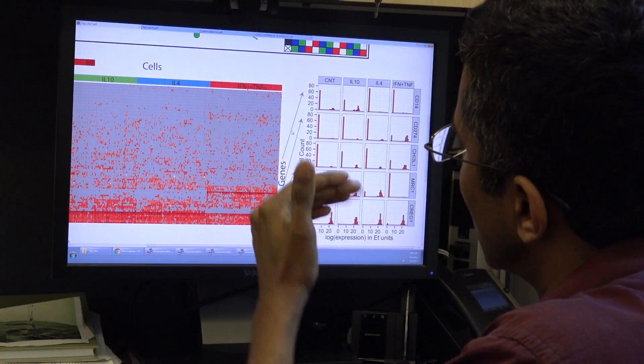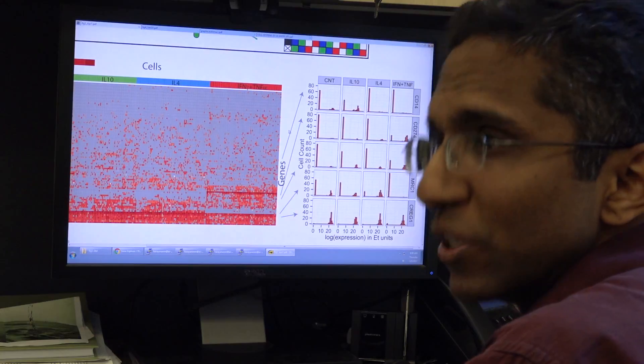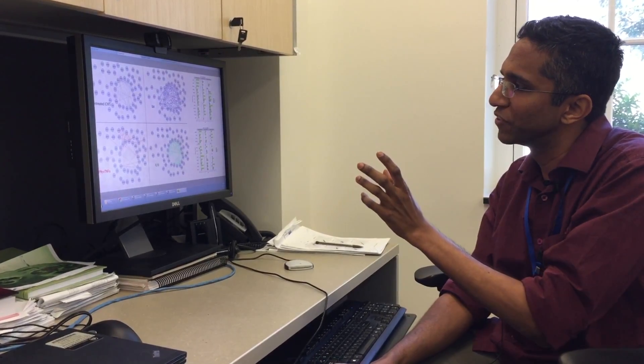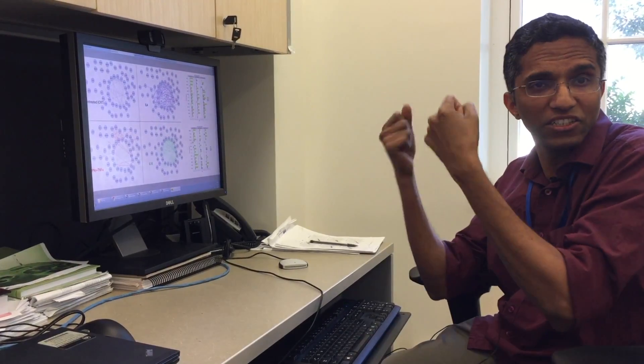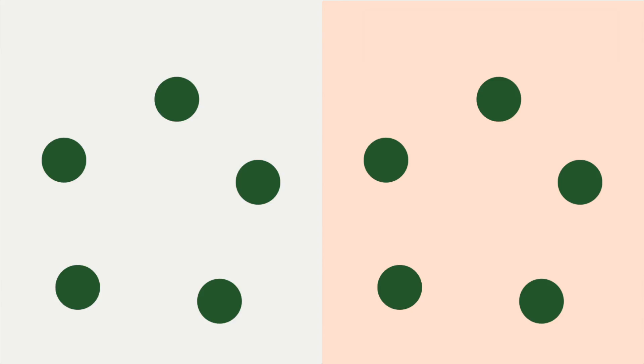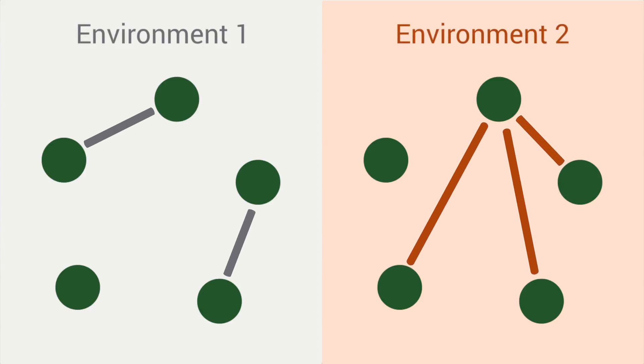You can try to look at how genes vary along with each other in order to infer these types of different networks where each circle here is a gene and there are connections between genes. Between different environments they could be rewired quite differently.